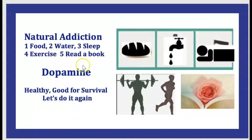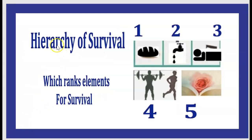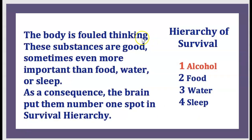There is a natural addiction for food, water, sleep, exercise, and books. This addiction is caused by dopamine and is healthy — good for survival. The hierarchy of survival is: first food, then water, then sleep, then physical training, then reading. The body fully thinks these substances are good, and as a consequence, the brain places them in the number one spot in the survival hierarchy.